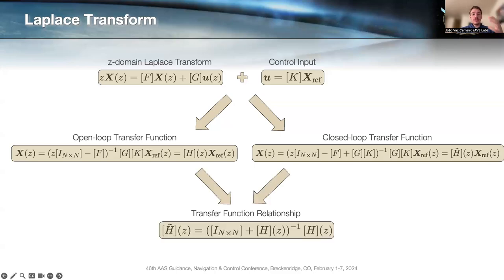These equations are similar but different. They actually relate to each other in a very important result shown here. Basically, h tilde, which is the closed loop transfer function, is equal to the inverse of the identity matrix plus h, everything times h. This is a very important result, and we'll go back to this.